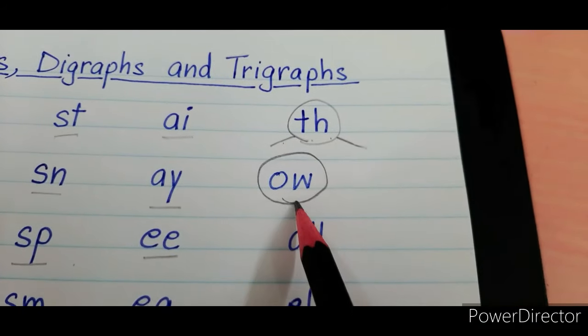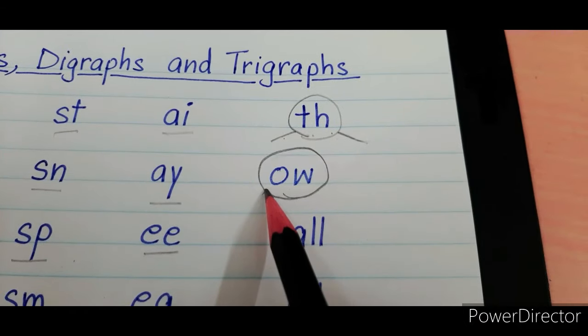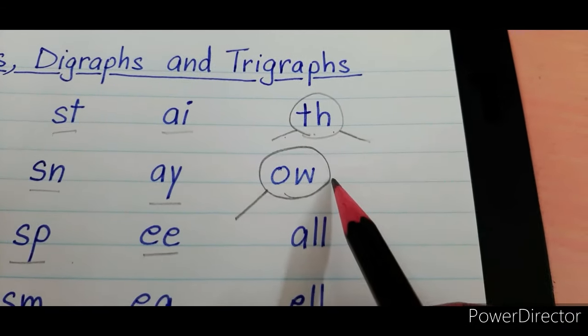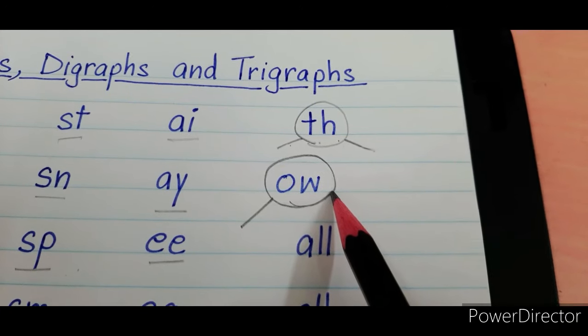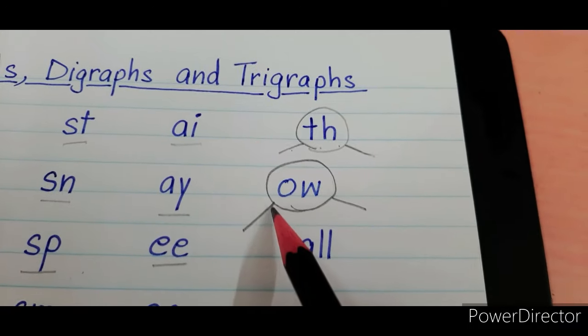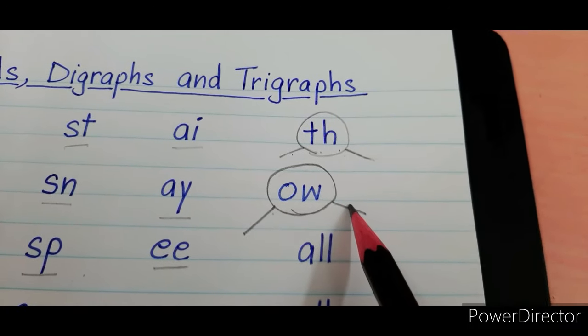Ow also has two sounds. Au, like cow. And the next sound is o, like row. Au, o.